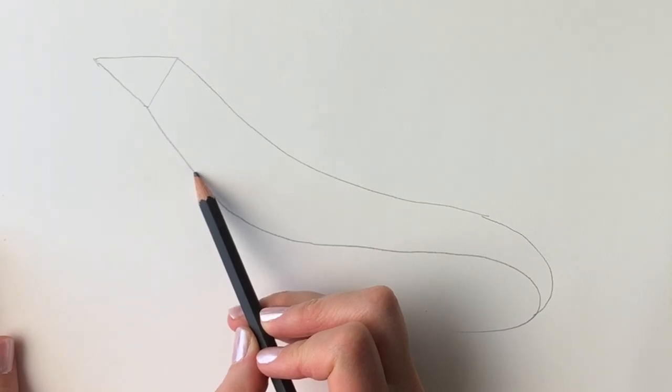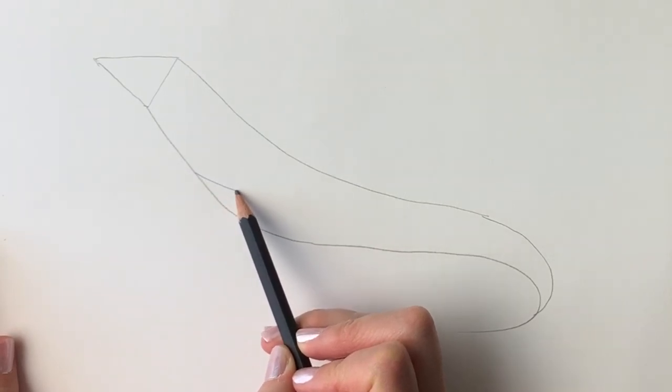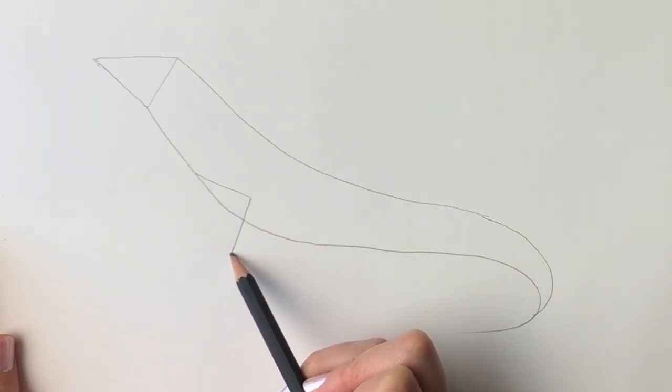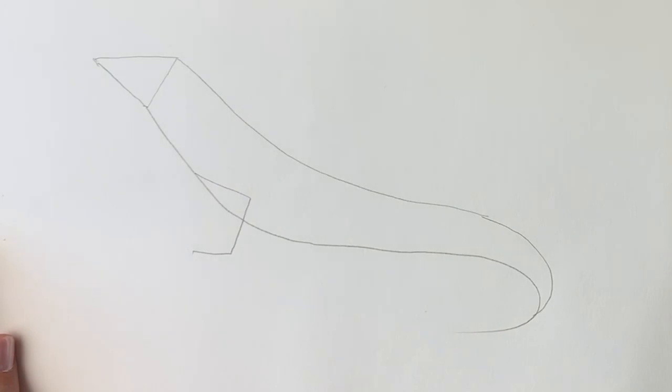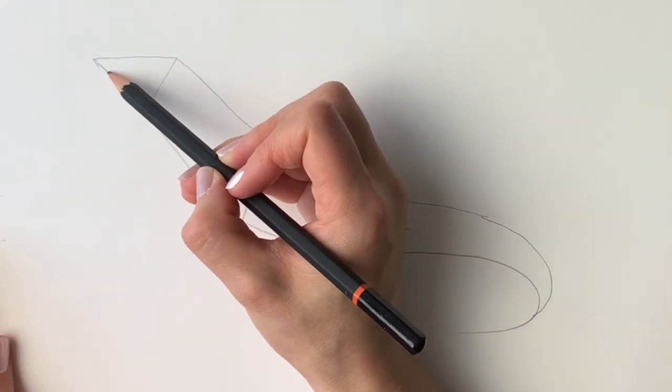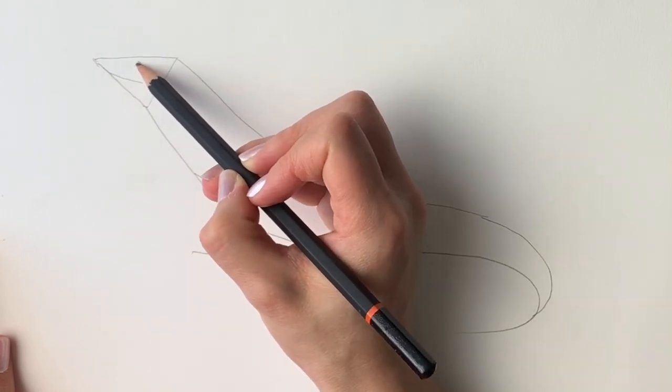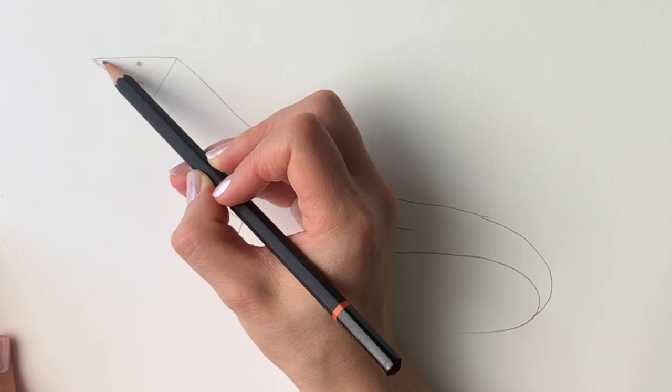Next we're going to do the front leg, so draw a line diagonally down, another one coming down, and then one for the foot. And also we're going to do the hind leg, so again just draw a line coming round, one coming down, and another one for the foot. And last but not least, we're going to do the mouth and the little eye and a nostril so it can breathe.